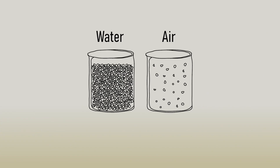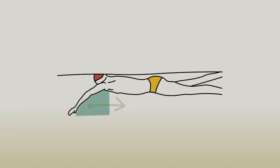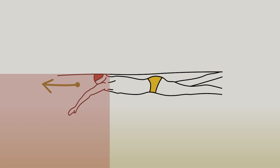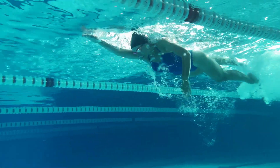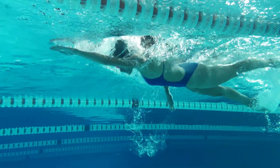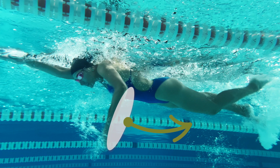Water is 800 times denser than air. This density is good if we consider that we can effectively grab it and hold it in our swim stroke to propel us forward. However, that same density also means it is more difficult to push through. By creating pressure or force against the water it will propel us forward, and if we can increase our surface area against the water we can create greater force and move forward.